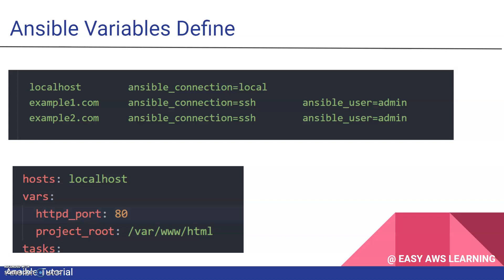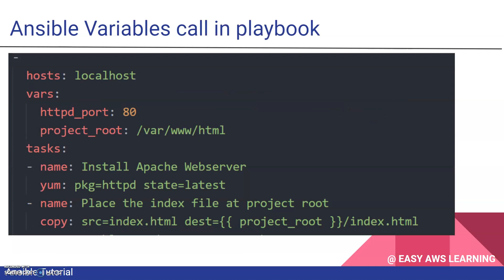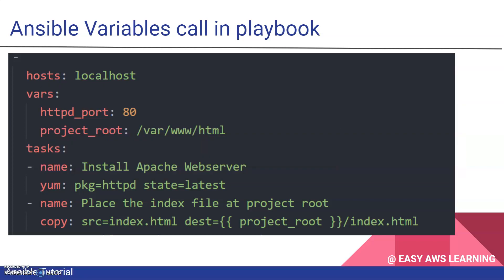This is an example of how we define and use variables. The first example is for the inventory file, and the second is for the playbook where we declare 'vars' and create multiple variables underneath. For instance, 'http_port' and 'project_root_path' are variables. In the task section, under the copy module we reference the destination using double curly braces — '{{ project_root }}' — calling the variable from the vars declaration. This is how variables are referenced in a playbook file.